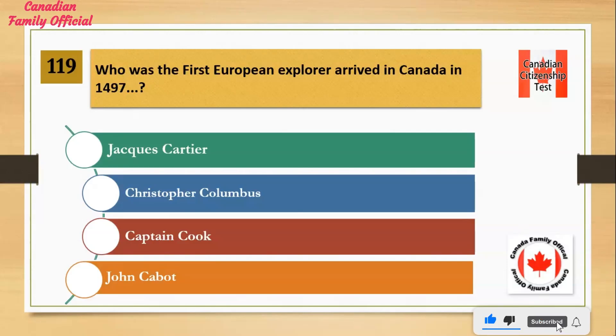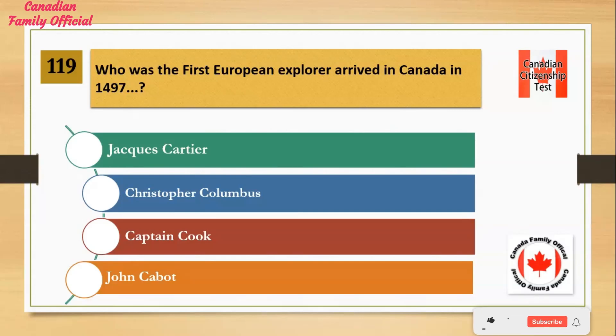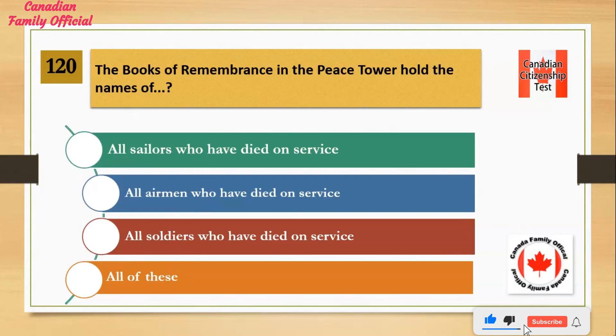Who was the first European explorer to arrive in Canada in 1497? Number 1: Jacques Cartier. Number 2: Christopher Columbus. Number 3: Captain Cook. Number 4: John Cabot. And the answer is John Cabot.